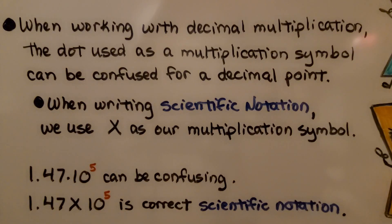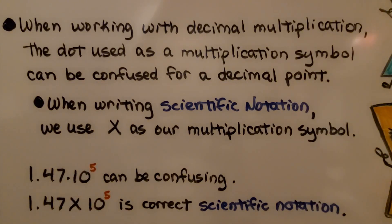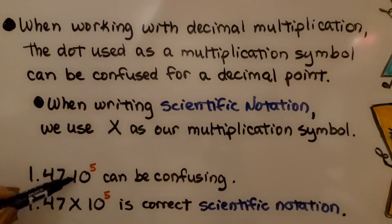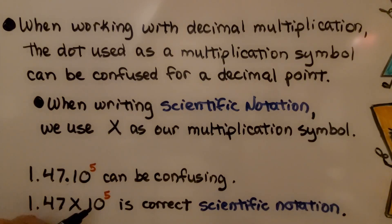When working with decimal multiplication, the dot used as a multiplication symbol can be confused for a decimal point, especially if we're not careful how we're writing. When writing scientific notation, we use a big X as our multiplication symbol. If we have 1.47 times 10 raised to the fifth power and we write quickly, our multiplication dot could end up looking like a decimal point — so 1.47 times (with the big X) 10 raised to the fifth power is correct scientific notation.